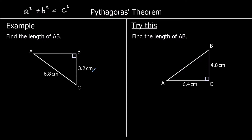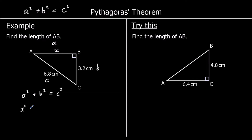This question says find the length of AB. So we're finding the length A to B. A and b are the two shorter sides and c is the hypotenuse, the longest side. So we've got a squared plus b squared equals c squared — that's Pythagoras' theorem. We can substitute in what we know. So we're saying a is x, giving us x squared plus 3.2 squared equals 6.8 squared.